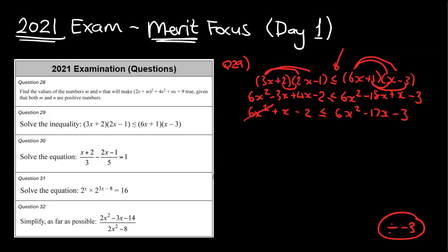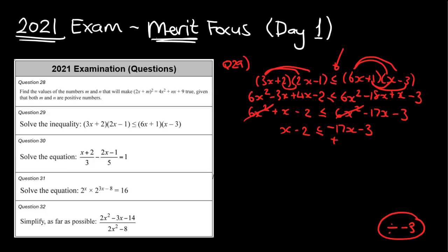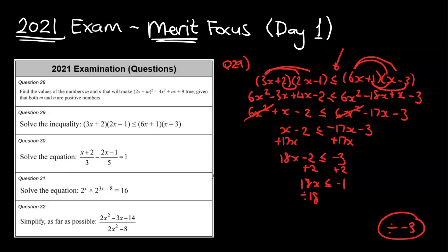Cancelling the 6x squared terms gives x − 2 ≤ −17x − 3. I eliminate the smallest x term by adding 17x to both sides, giving 18x − 2 ≤ −3. Then adding 2 to both sides: 18x ≤ −1. Dividing by 18 — noting it's positive so no sign flip needed — gives x ≤ −1/18.